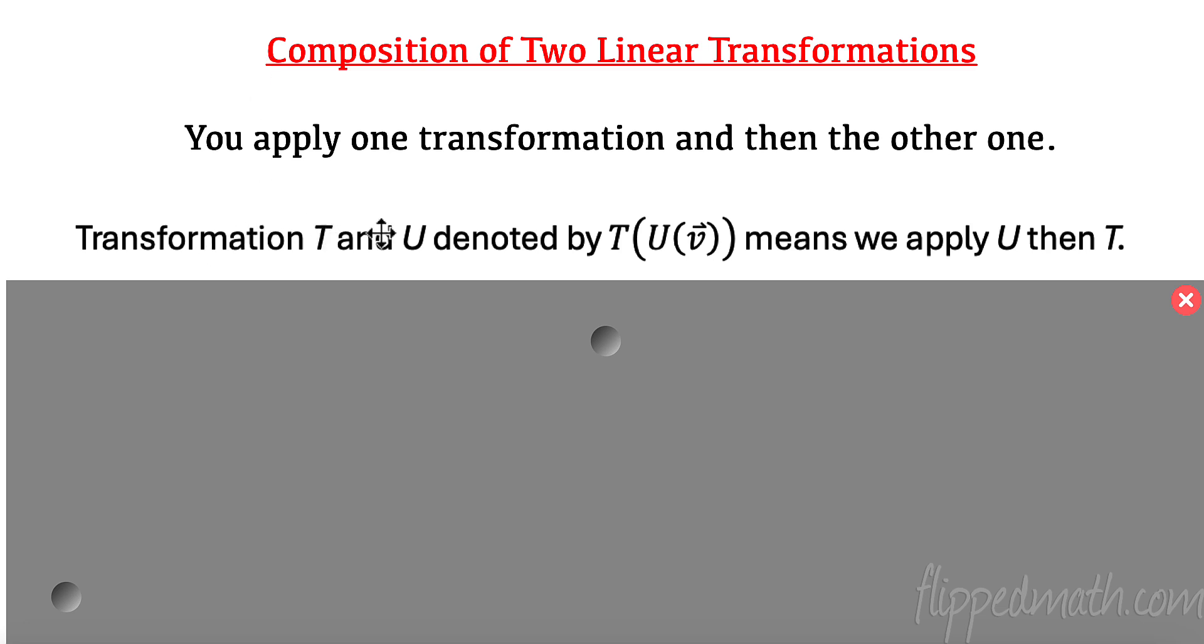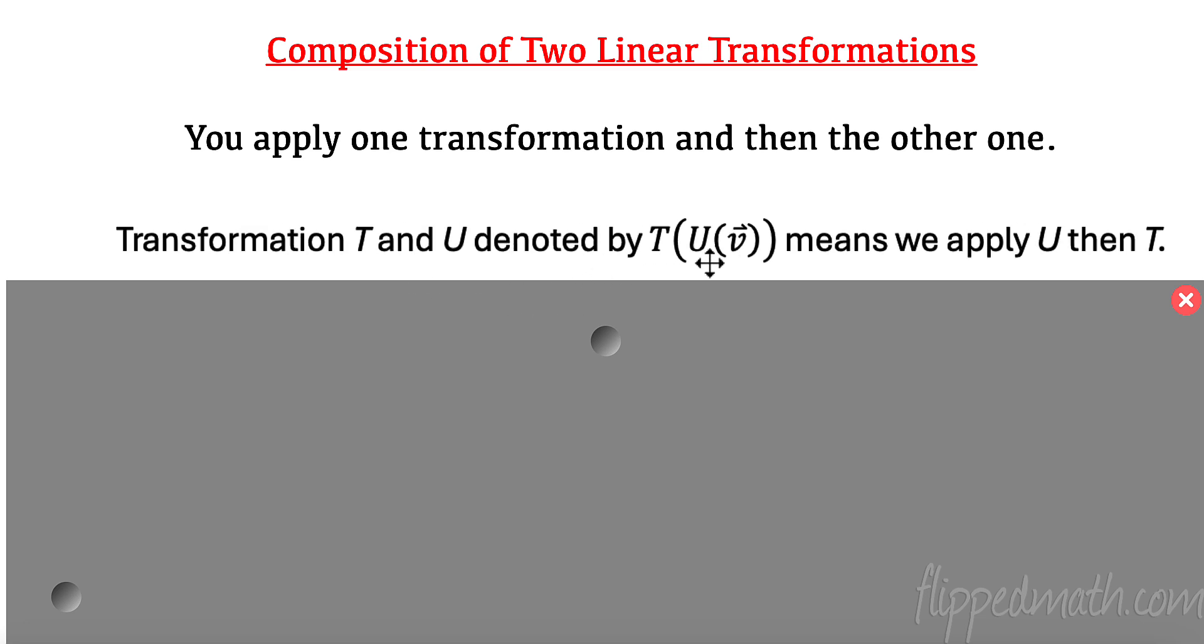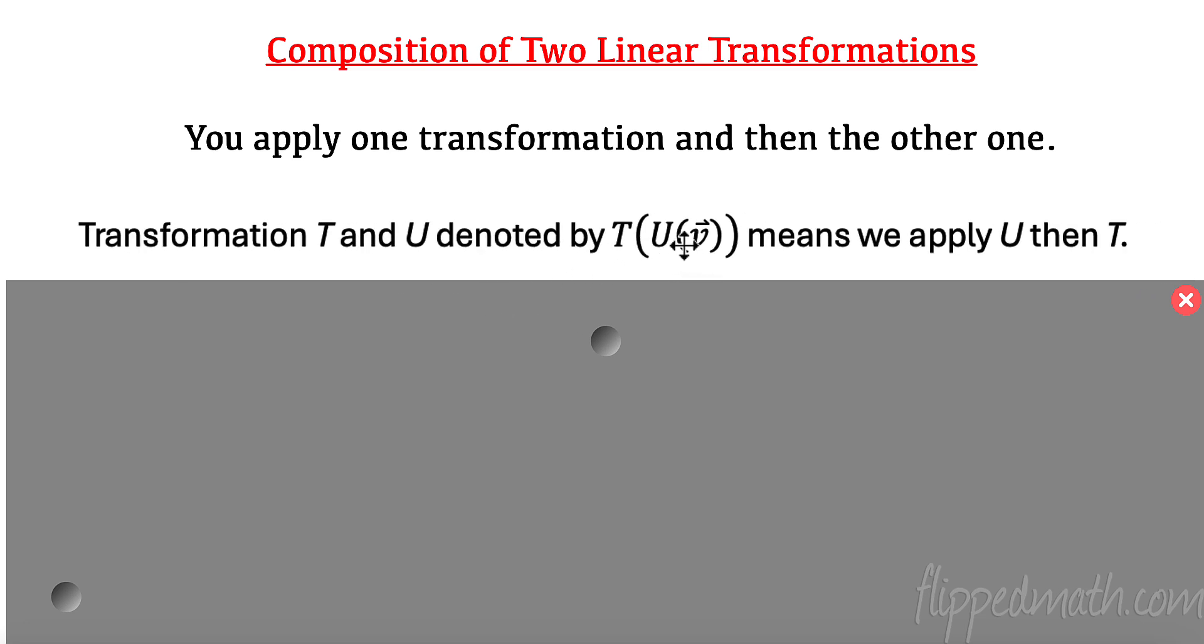So if we have transformation T and U, and we denote it by this where U is the first transformation. U is the first thing that affects the vector. Then whatever I get from that, then I do my T transformation. That's what this means. We apply U, then we apply T.